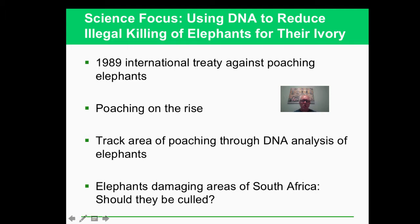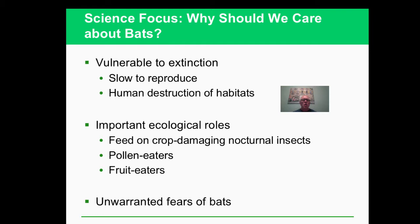The DNA approach is about trying to narrow down where elephant tusks came from. If they're coming from areas where illegal poaching is going on, they'll take that into account and try to keep people from doing it - though it's very difficult to do.